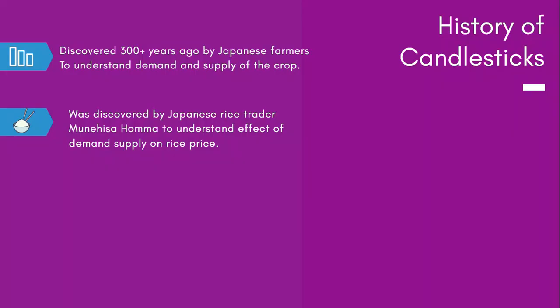In Japan, when traders used to trade rice, they wanted to understand how much demand or supply was in the market so they could increase or decrease prices accordingly. For example, if today the price of rice in the market is 20 rupees per kg and a lot of people are buying it, that means there is subsequent demand and hence rice traders used to increase the price to maybe 21 or 22.